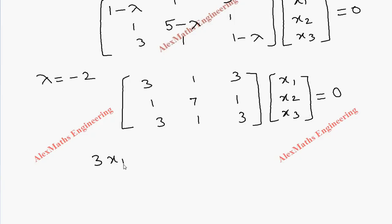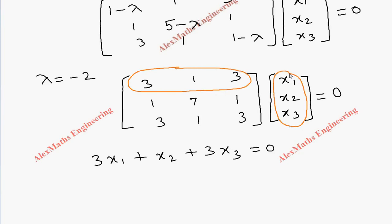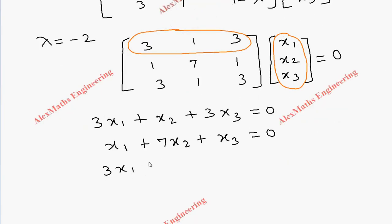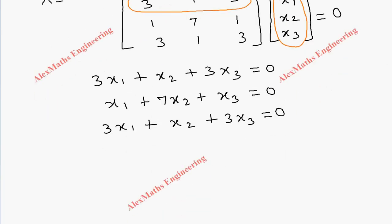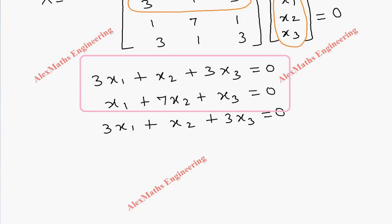Multiplying out gives three equations: 3x1 plus x2 plus 3x3 equals 0 (first equation); x1 plus 7x2 plus x3 equals 0 (second equation); 3x1 plus x2 plus 3x3 equals 0 (third equation). The first and third equations are the same, so we consider only the first and second equations.